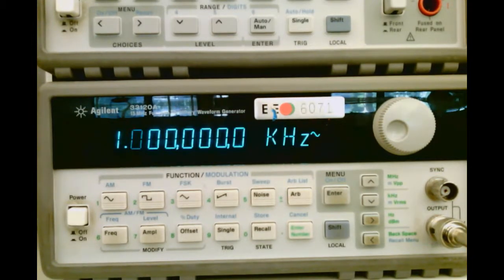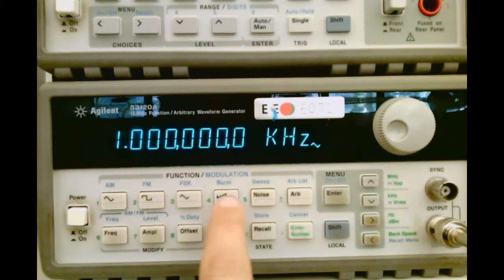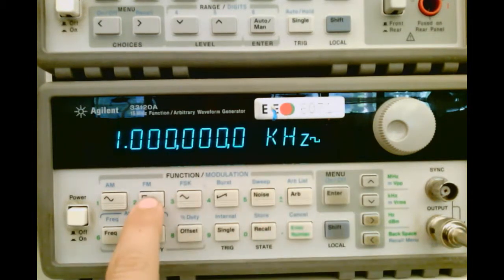Now we are in high Z mode and are free to set our waveform. You have a choice of a sine wave, square wave, triangle wave, or ramp wave. Notice that as I change the wave type, it shows up on the right.